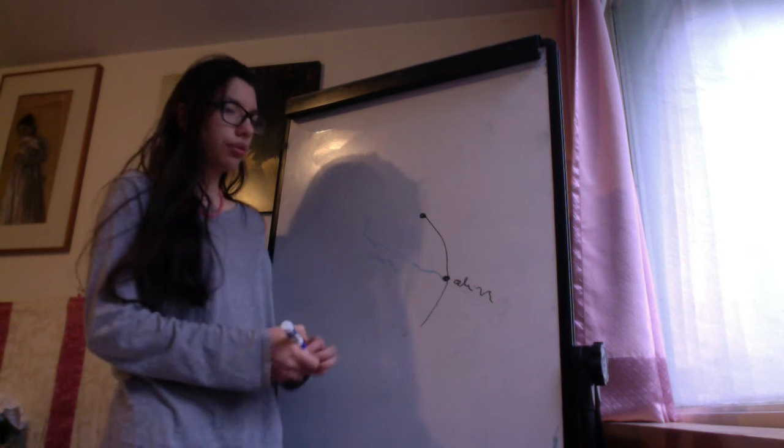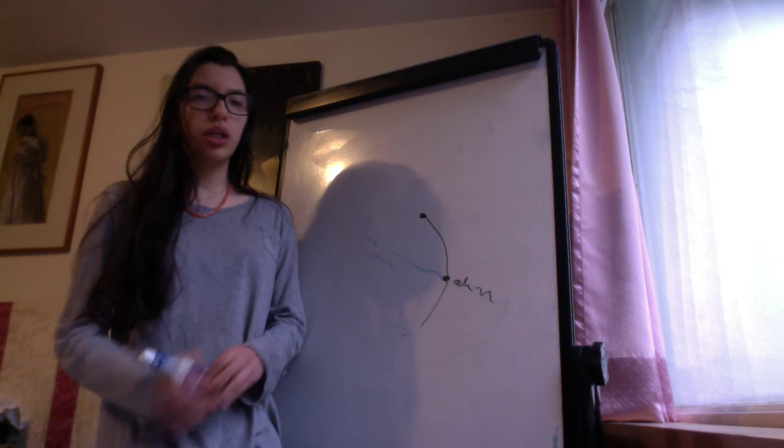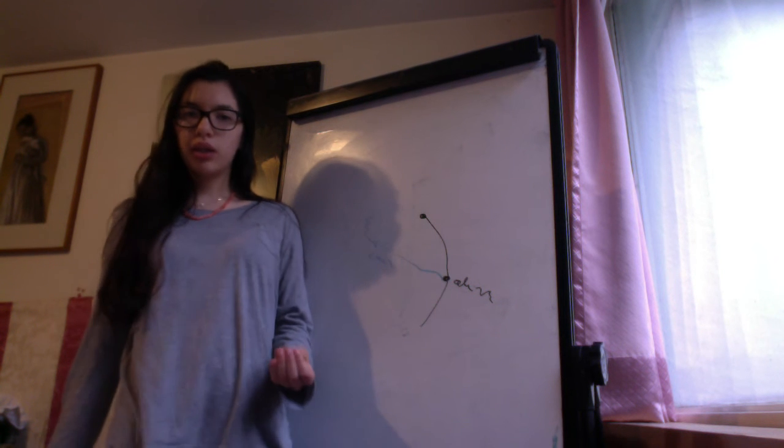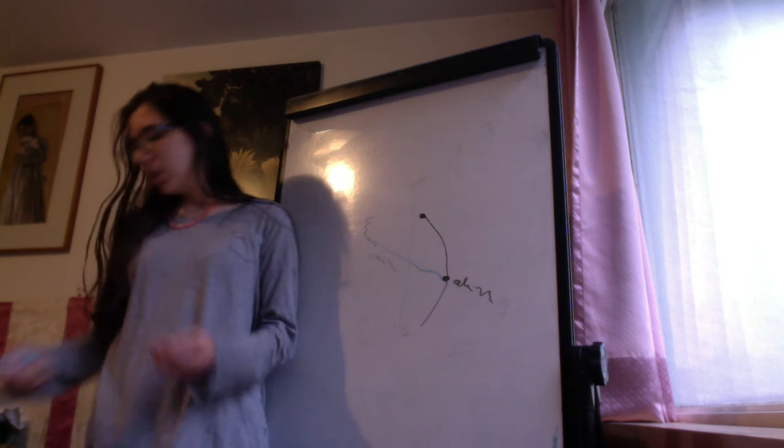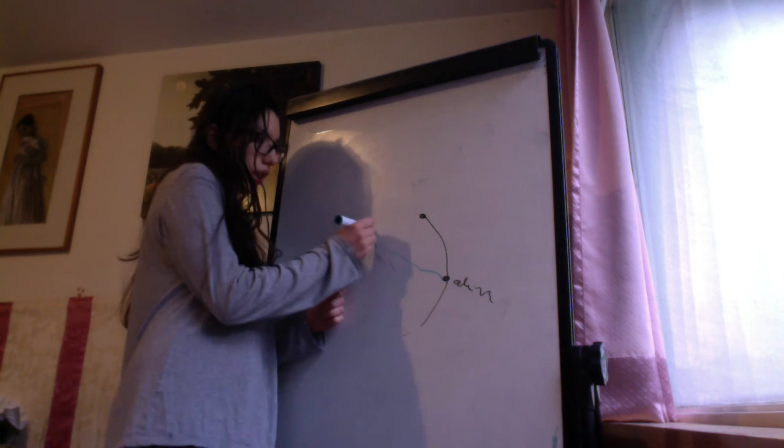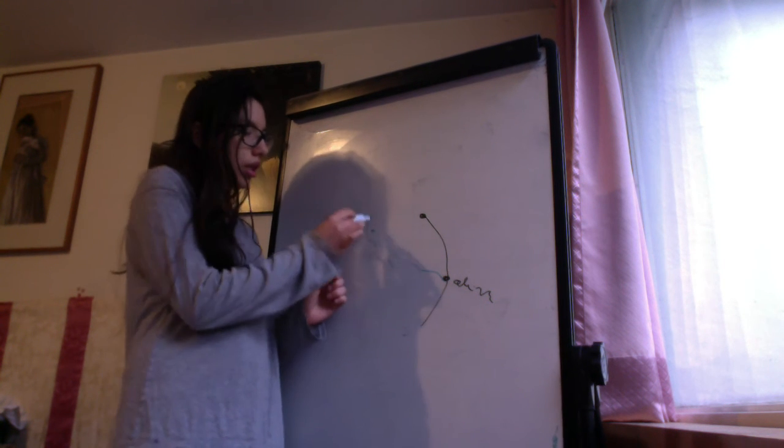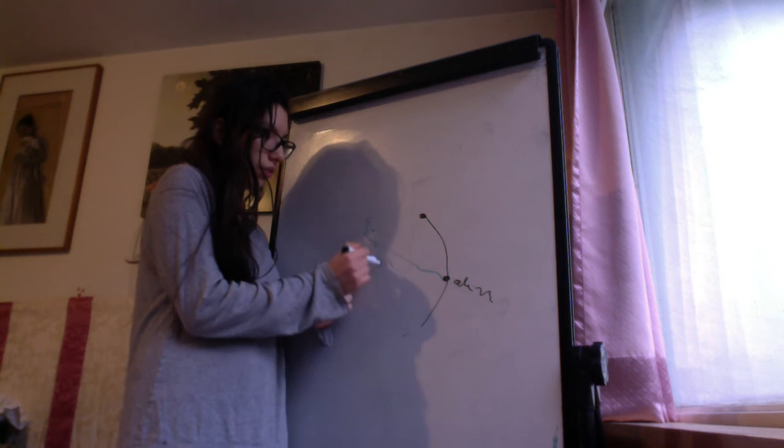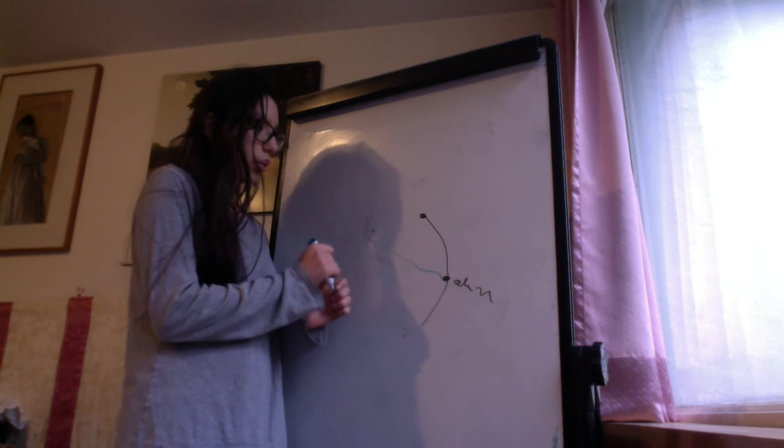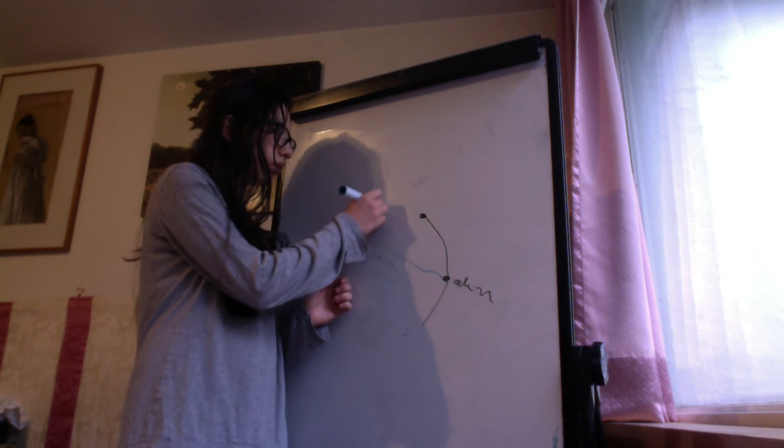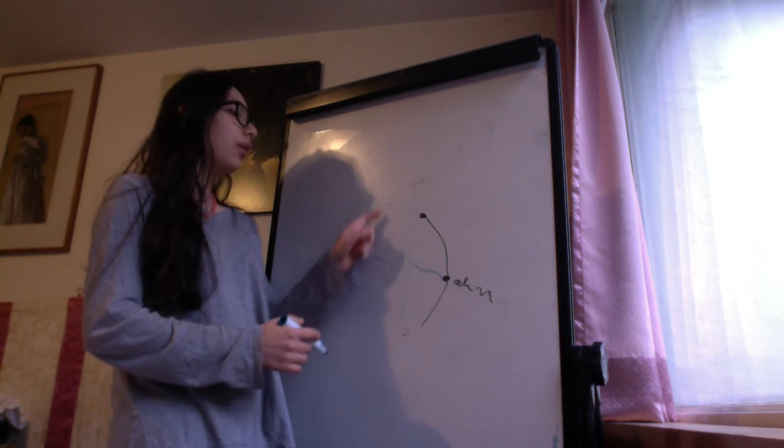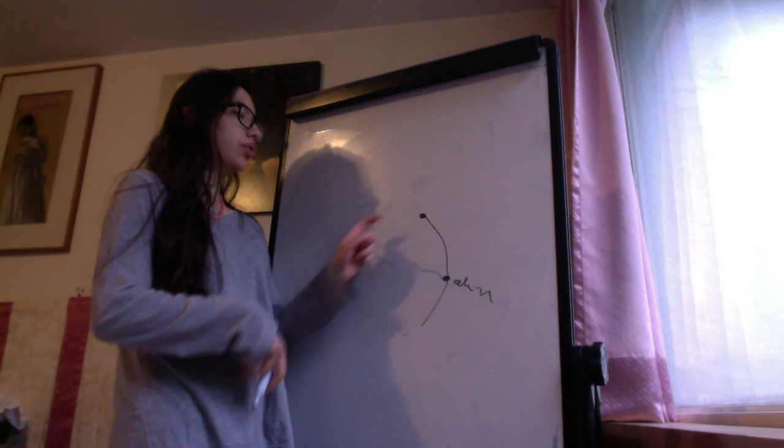The climbing fibers go directly to perkinje cells but also to the deep nuclei. Deep nuclei here we are talking about the dentate nuclei. They will go to the dentate nucleus and this was through the inferior cerebellar peduncles. Now, through the superior cerebellar peduncles, they will go out and they will decusate.